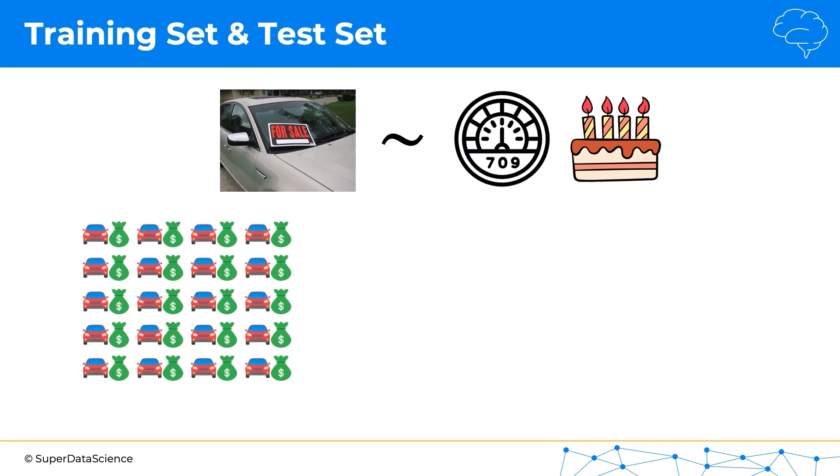So what splitting your data implies is separating a part of your data out before you do anything, and usually that's about 20% of the data. So since we have 20 cars here, that's about four cars that we separate out.